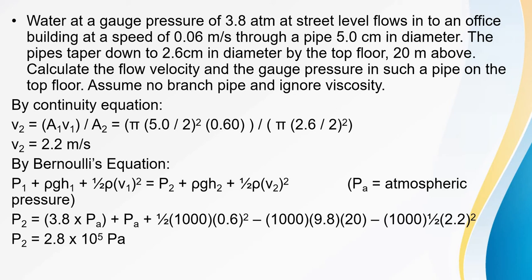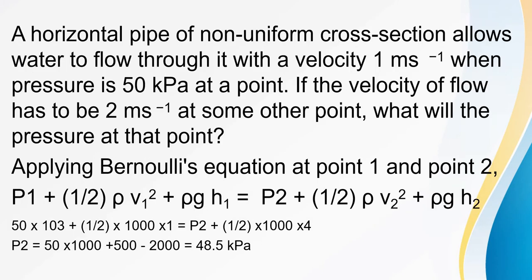Next problem: a horizontal pipe of non-uniform cross-section allows water to flow through it at a velocity of 1 m/s when pressure is 50 kilopascal at a point. If the velocity of flow has to be 2 m/s at some other point, what will be the pressure at that point?